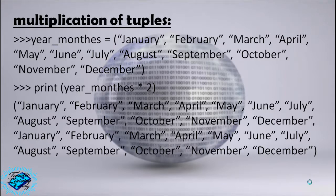Multiplication of tuples. year_months equals January through December. Print year_months multiplied by 2. We will get a tuple of January through December, then January through December again — the full tuple repeated twice.